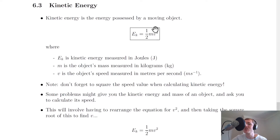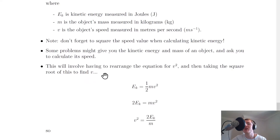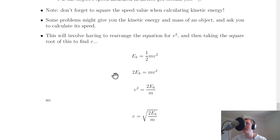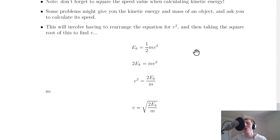Don't forget to square the speed value when calculating kinetic energy — it's a common mistake to forget that. Some problems might give you the kinetic energy and mass of an object and ask you to calculate its speed. This will involve rearranging the equation for v² and then taking the square root to find v.